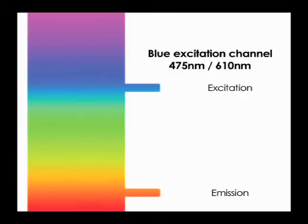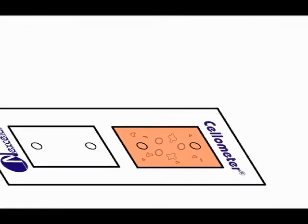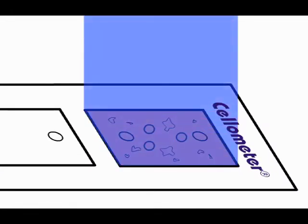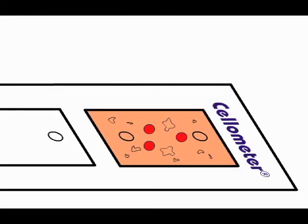The Cellometer AutoX4 is configured with a blue excitation channel. Chlorophyll containing algae cells are excited by the blue light, emitting red fluorescence. Debris does not produce a fluorescence signal.